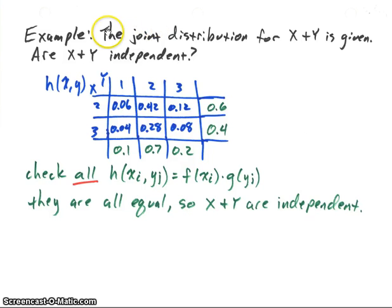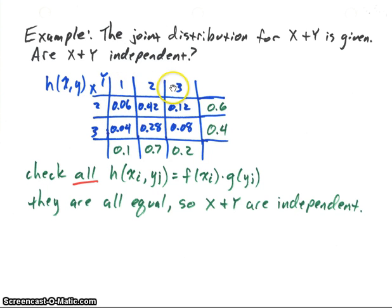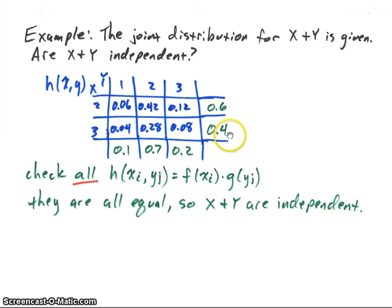Let's look at another example. The joint distribution function is given here, with X and Y in our function H(x, y). Y can be 1, 2, or 3, and X can be 2 or 3. Again we need to find f(x) and g(y). We sum the rows to get f(x): we get 0.6 and 0.4. For g(y), we sum the columns to get 0.1, 0.7, and 0.2.